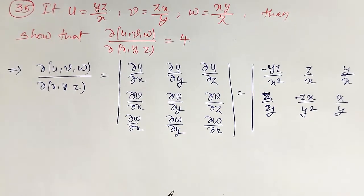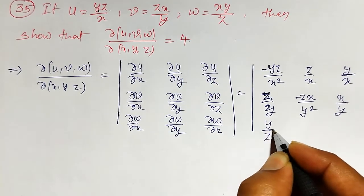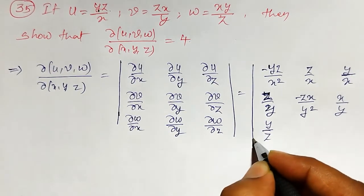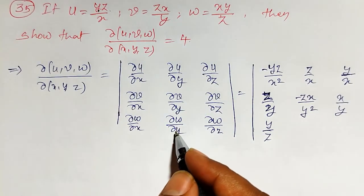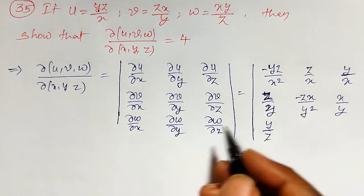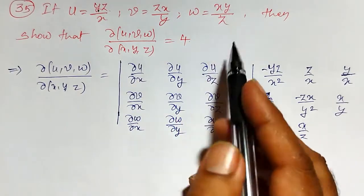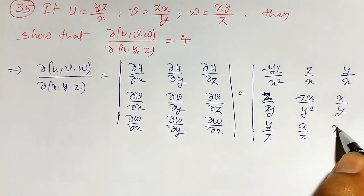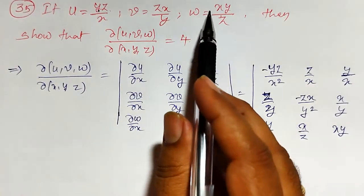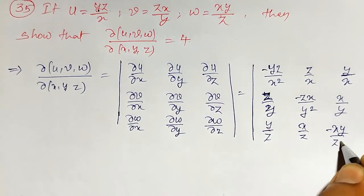For the third row, w = xy/z. For ∂w/∂x: y/z is constant and the partial derivative of x is 1, so ∂w/∂x = y/z. For ∂w/∂y: x/z is constant and the partial derivative of y is 1, so ∂w/∂y = x/z. For ∂w/∂z: xy is constant and the partial derivative of 1/z is −1/z², so ∂w/∂z = −xy/z².